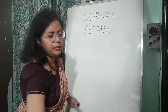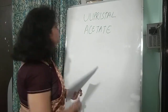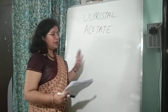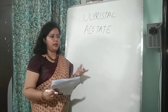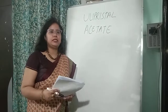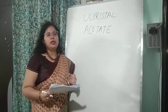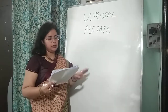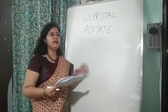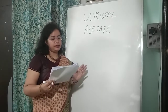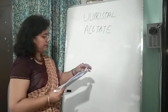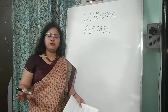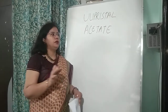Ulipristal emerged as a brilliant medicine — considered a boon. Some basic history: leiomyoma was first described in 1791 by Matthew Bailey at St. George Hospital in London. It is the most common tumor of the reproductive age group in the uterus.